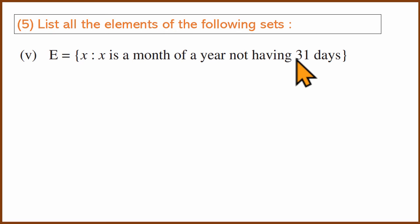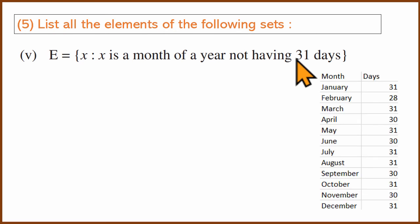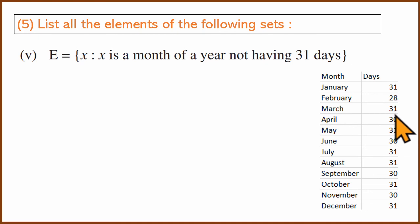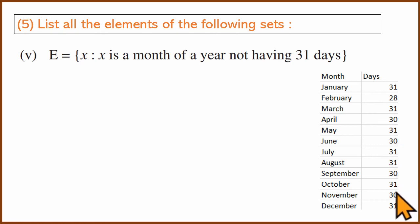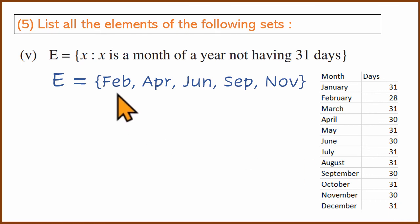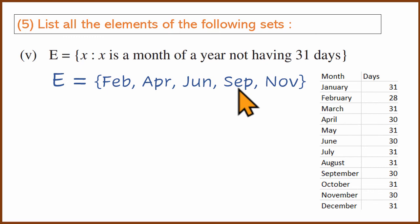Months not having 31 days: February, April, June, September, November. So the set is {February, April, June, September, November}.